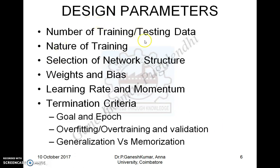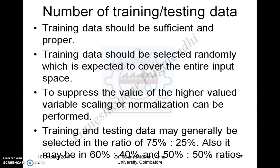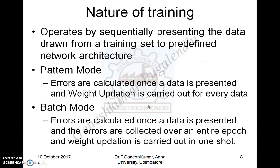These are the control parameters to consider before developing a backpropagation neural network model. First, the number of training data: neural networks learn from data, so the collected data must be divided into training and testing parts — typically in some ratio or using cross-validation strategies. Second, the nature of training: there are two modes — pattern mode, where errors are calculated for every data point, and batch mode, where errors are calculated for a group of data.